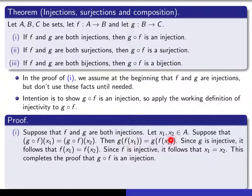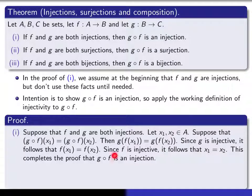We know this condition implies that g(f(x₁)) = g(f(x₂)), because that is the value of f composed with g at those points. Since g is an injection and g of one argument equals g of another, the arguments must be the same — so f(x₁) = f(x₂). But now using the fact that f is an injection, f at one point equals f at another point, and therefore x₁ = x₂. This carries out the working definition of injectivity for f composed with g, which implies that f composed with g is an injection.